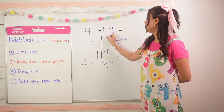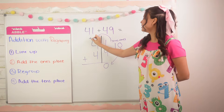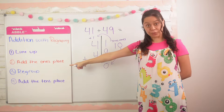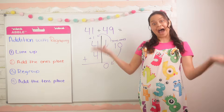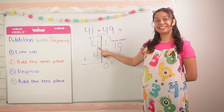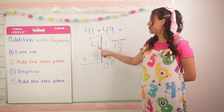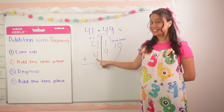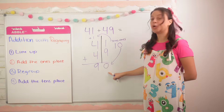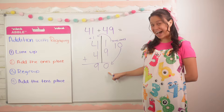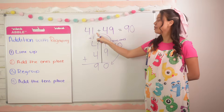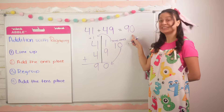That was regrouping — step three. Now step four: add the tens place. 1 ten plus 4 tens is 5 tens, and 5 tens plus 4 tens is 9 tens, giving me a total of 90. Awesome job — 41 plus 49 is equal to 90.